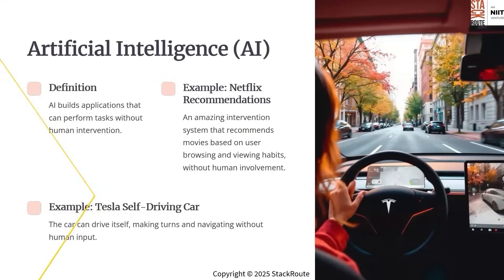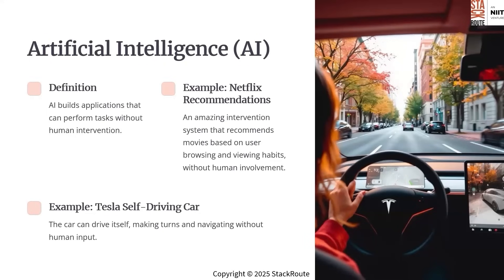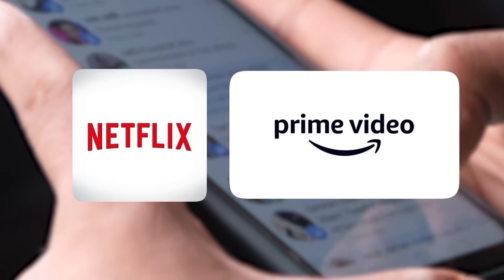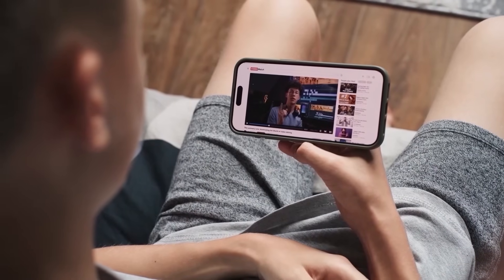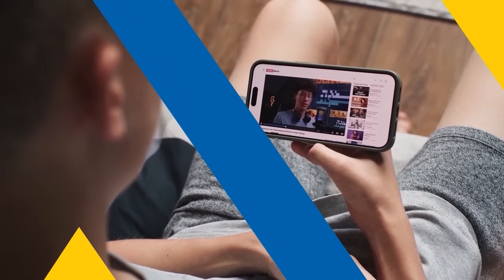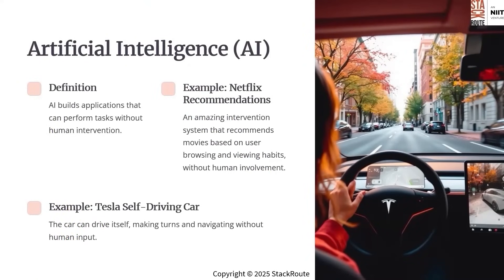Let's start with artificial intelligence. AI is all about creating applications that can perform tasks without human intervention. Think of it as building systems that can think, learn and act on their own. For example, when you are scrolling through Netflix or Amazon Prime, have you noticed how it recommends shows and movies tailored just for you? That is AI at work. It analyses your viewing habits and suggests content to keep you engaged, and no human is needed.